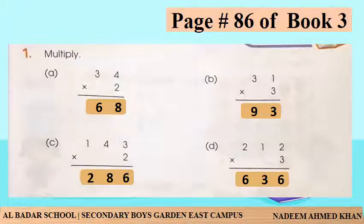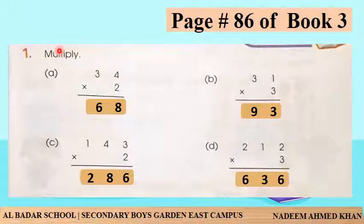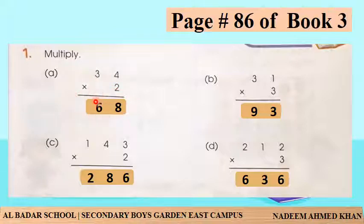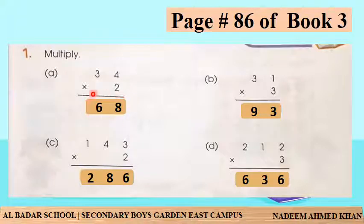Take out page number 86, book 3, question number 1: Multiply. تو پیارے بچوں، یہ questions ہیں، ہمیں انہیں multiply کرنا ہے۔ تو یہ question کیا ہے ہمارا - 34 multiplied by 2 اور یہ blank ہے۔ اب 2 کا table: 2 fours are 8، 8 لکھ دیجئے، 2 threes are 6، 6 لکھ دیجئے۔ تو ہمارا answer کیا ہے - 68۔